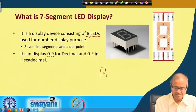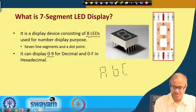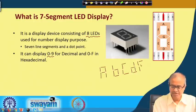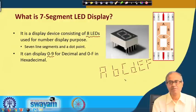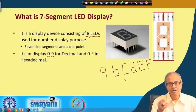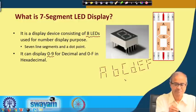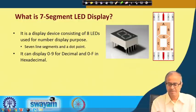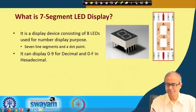You can display A like this, B in lowercase, C, D in lowercase, E, and F. So in addition to 0 to 9, you can also display the hexadecimal characters. Therefore, the 7-segment unit is very useful as a hexadecimal display device. There are 7 segments numbered A, B, C, D, E, F, and there is a dot point.